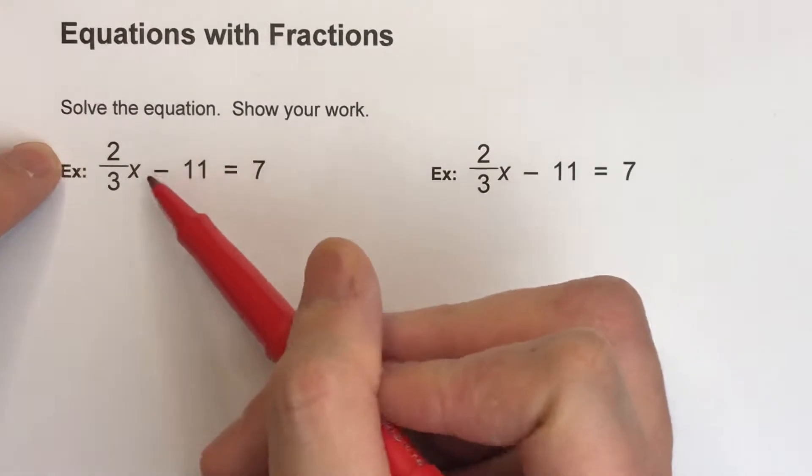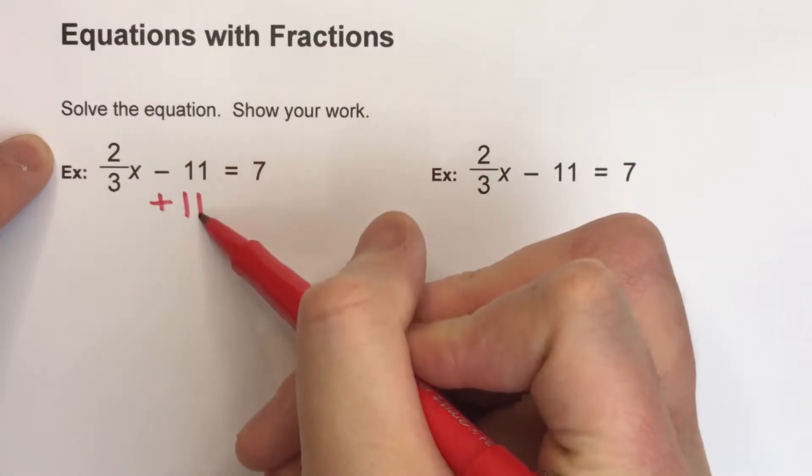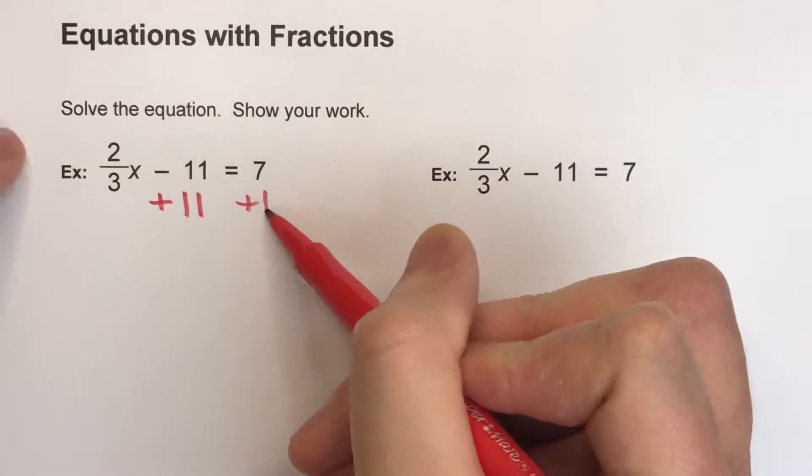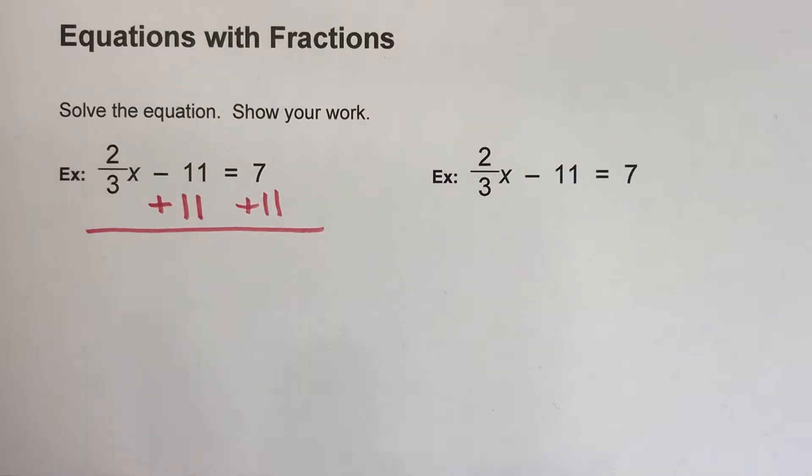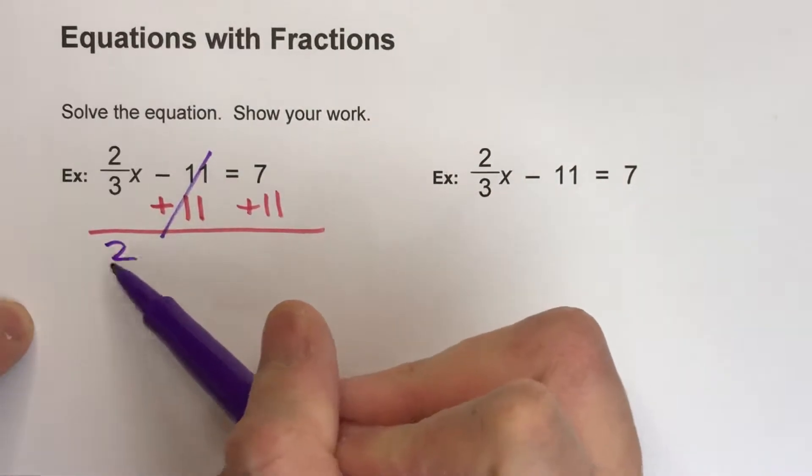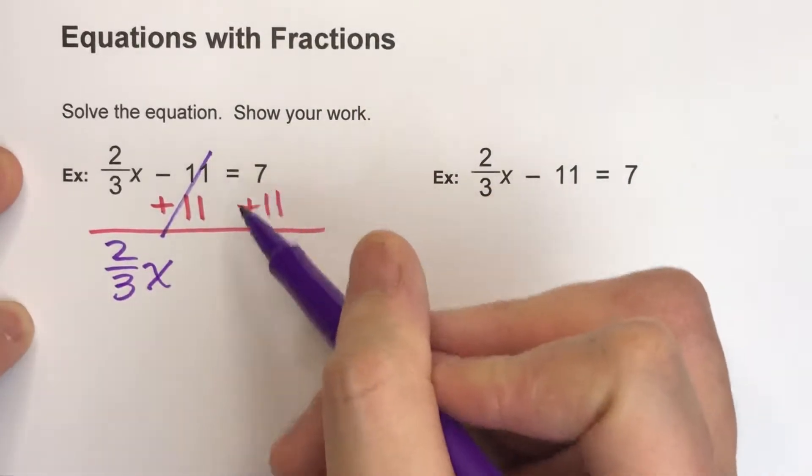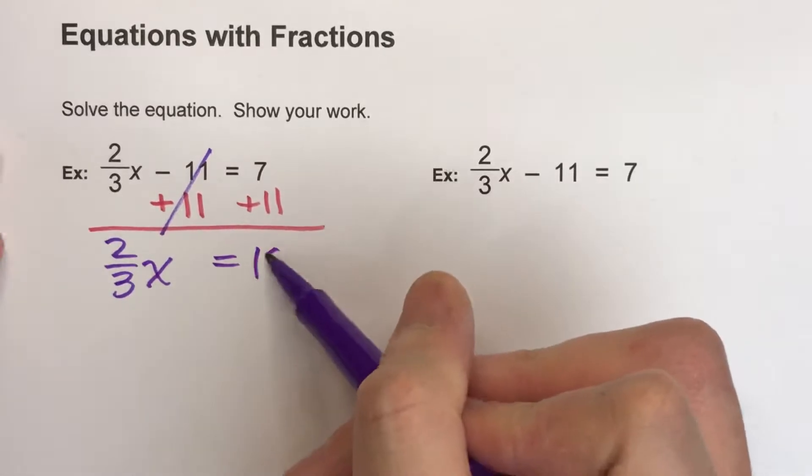My first thing I want to do is undo the minus 11, so I'm going to add 11, but what I do to one side of the equal sign I have to do it to the other. And when I do that, the 11s are going to undo each other, and 2/3x drops down, equals drops down, and then I've got 18.